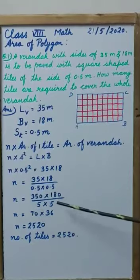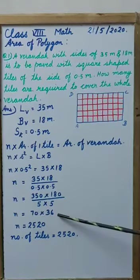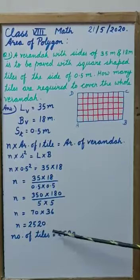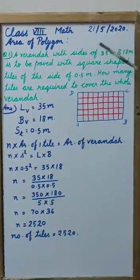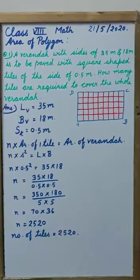180 by 5, 36. And when we multiplied those two, it is 2520. It means for covering this veranda, we need 2520 tiles.